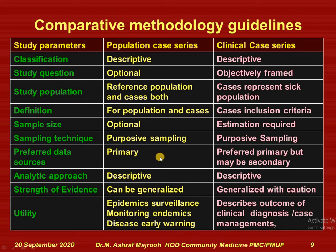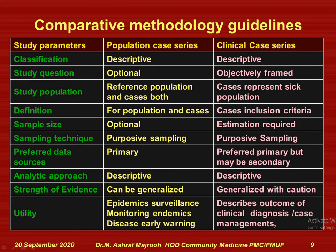Preferred data sources: primary data is preferred for population case series; primary data is preferred but secondary data can also be used in clinical case series. The analytic approach is descriptive in both cases. Strength of evidence can be generalized over the population when the denominator is known, but generalization should be done with caution. The main utility of population case series is epidemic investigation and surveillance of endemic diseases, disease early warning, and monitoring; clinical case series describe outcomes of clinical diagnosis and case management.